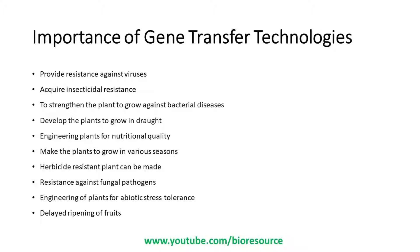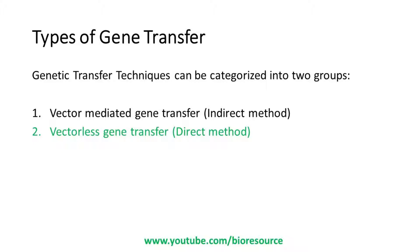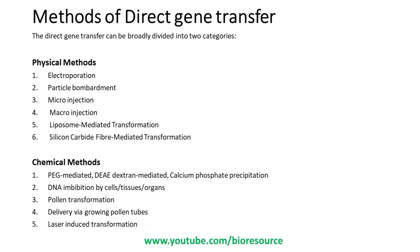So these are the important features: improvement of resistance against viruses, insecticidal resistance, and other nutritional quality improvements. Genetic transfer techniques can be categorized into two different groups: vector mediated gene transfer, or the indirect method, and vectorless gene transfer, that is the direct method. The term direct gene transfer is used when foreign DNA is directly inserted into the plant genome. Majority of the methods for direct transfer of DNA are simple and very effective and do not require any vector for transporting the genetic material into the plant cell. The direct gene transfer can be broadly divided into two categories based on the physical method and chemical method.